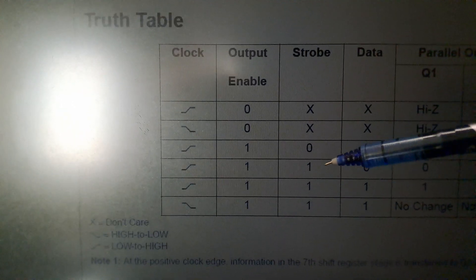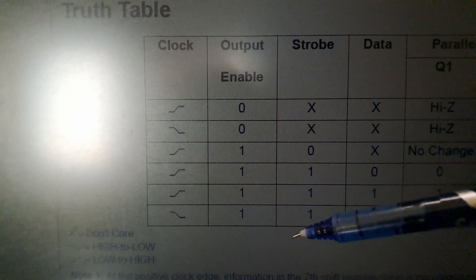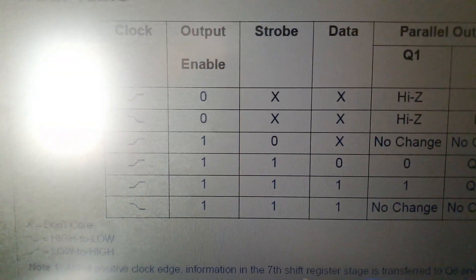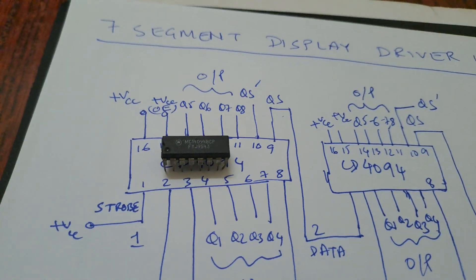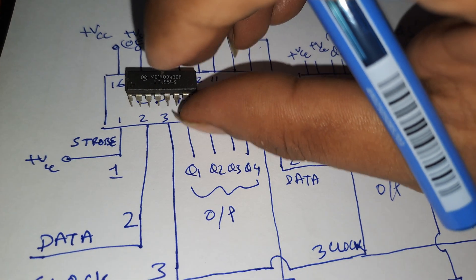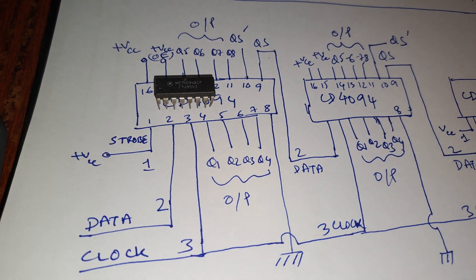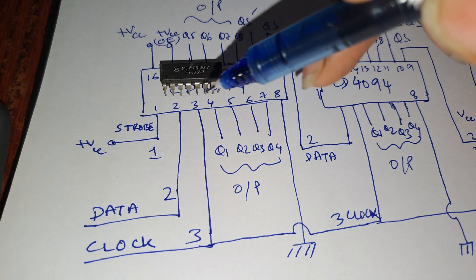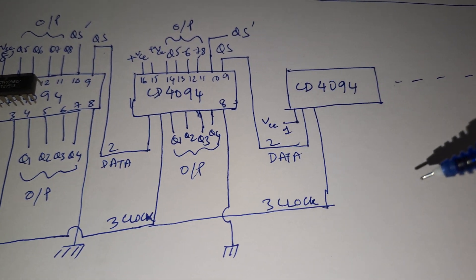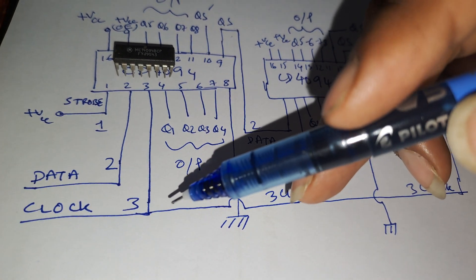So your strobe must be 1 — all the strobe pins must be 1 — and the output enable pins must also be 1 in order for the shift register to function. You can see that I have connected the strobe pin to the supply VCC. The second pin is the data pin, the third pin is the clock, and the clock is looped through all four shift registers. Whatever number of displays you want, you have to connect all of them with the same clock signal.